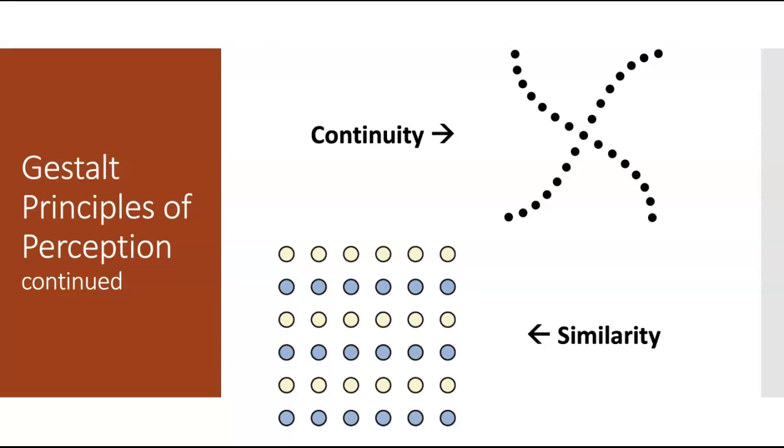And then the next Gestalt principle is continuity. So this is the idea that we are more likely to perceive continuous, smooth flowing lines rather than jagged, broken lines. So good continuation would suggest that we are more likely to perceive this as two overlapping lines rather than four lines meeting in the center.